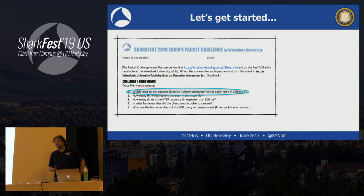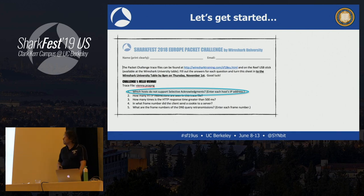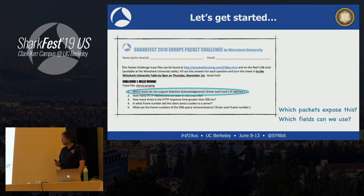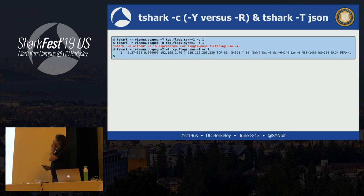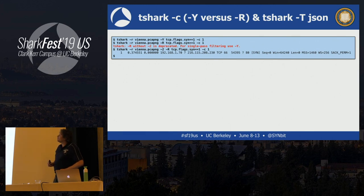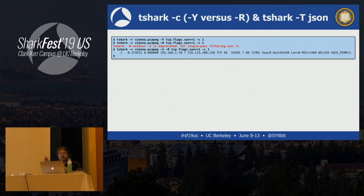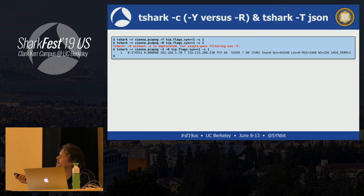Let's get started with the first challenge from 2018 Europe. The question is: which hosts do not support selective acknowledgments? Enter each host IP address. We need to find which packets expose this behavior and which fields we can use. Let's switch to a live T-Shark demo.